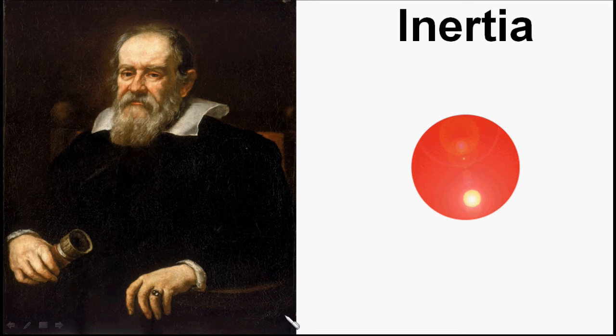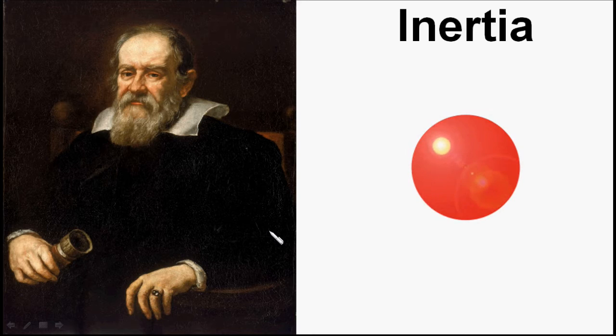Objects don't have a tendency to stop. Galileo first introduced the idea that an object has a tendency to resist changes in its state of motion. This tendency is called inertia.